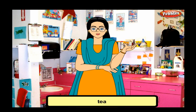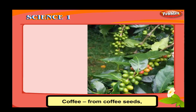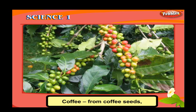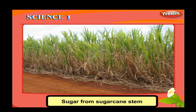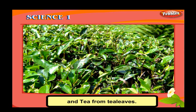Coffee comes from coffee seeds, sugar from sugarcane stem, and tea from tea leaves.